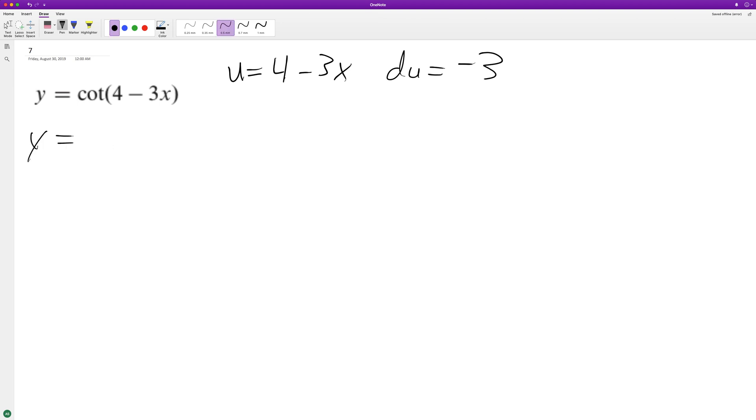So y is equal to cotangent u. So that means that for y prime, we're going to be equal to du. So we take the derivative of what's on the inside for u.